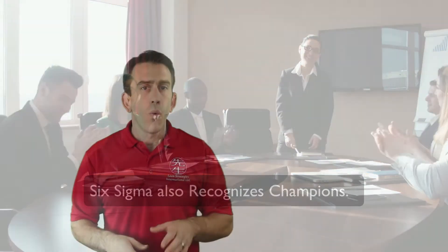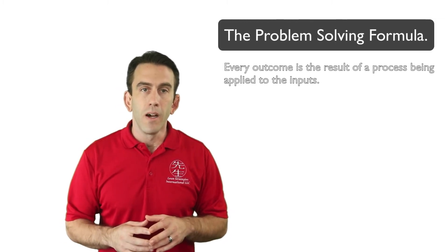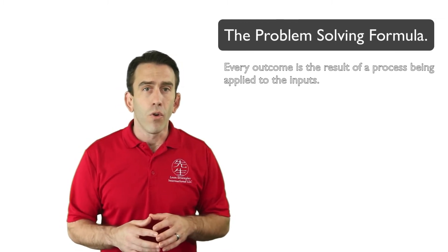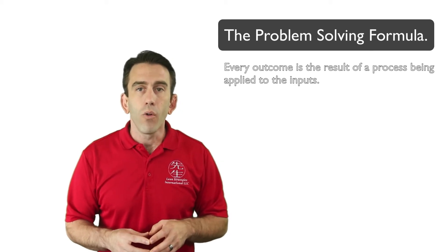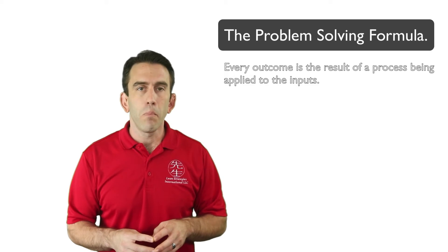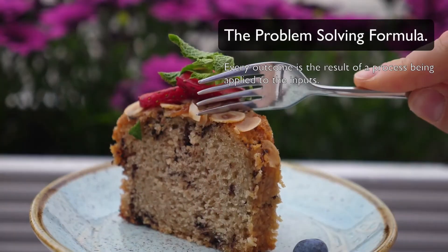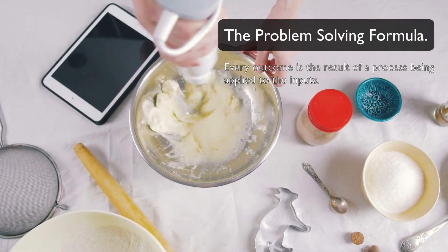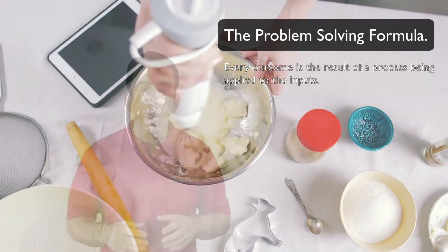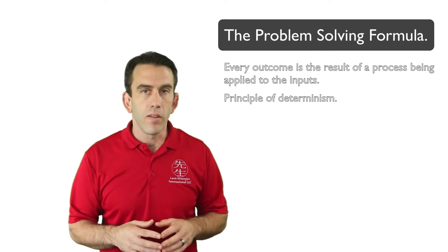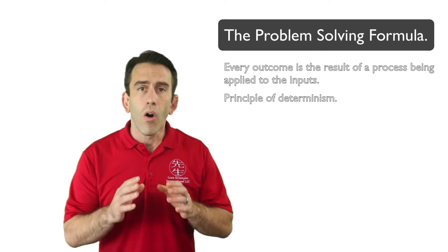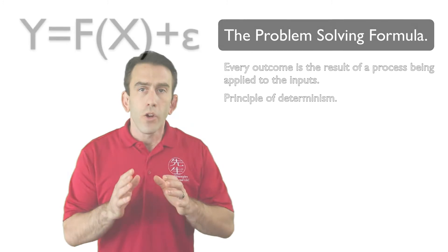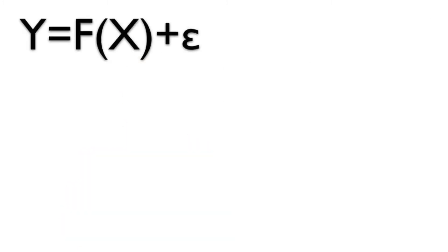Now let's begin understanding one of the most foundational concepts in Six Sigma: the problem solving formula. This formula helps us to understand that every outcome is the result of a process being applied to the inputs. In other words, the outputs are determined by the application of a specific function or functions on the inputs. This idea is oftentimes referred to as determinism and is a principle that stretches all throughout Six Sigma.